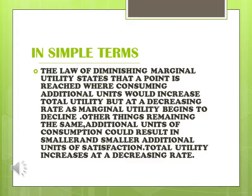The law of diminishing marginal utility states that a point is reached where consuming additional units would increase total utility, but at a decreasing rate, as marginal utility begins to decline, other things remaining the same. Additional units of consumption result in smaller and smaller additional units of satisfaction, so total utility increases at a decreasing rate.